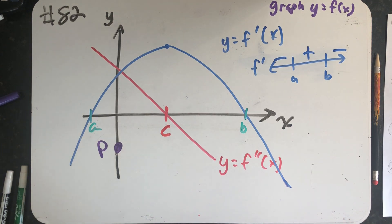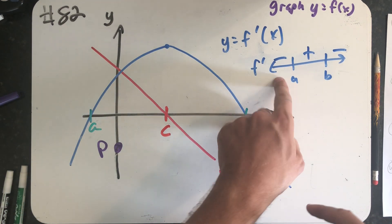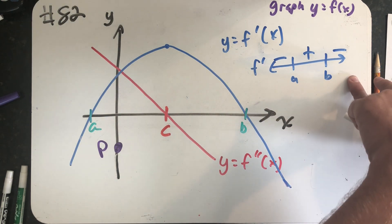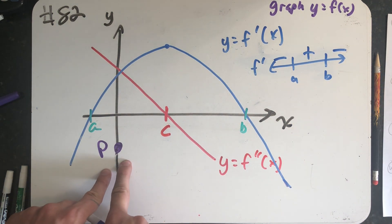So I know whatever function f I'm going to graph decreases until a, increases between a and b, and then decreases again. And has to go through the point p.